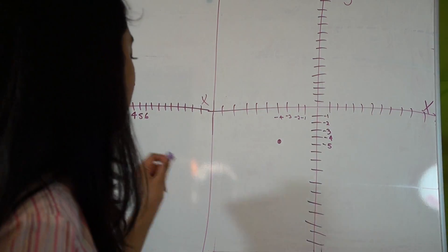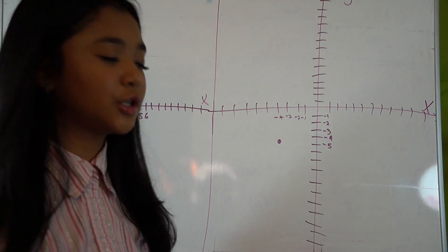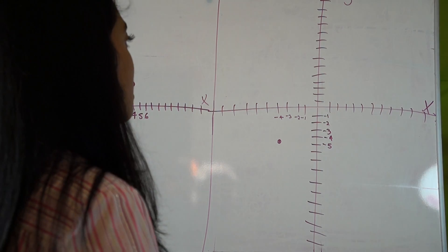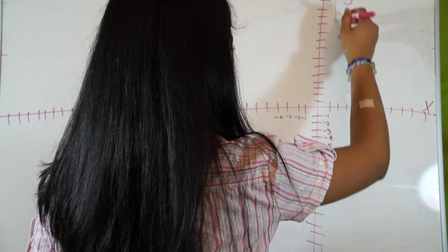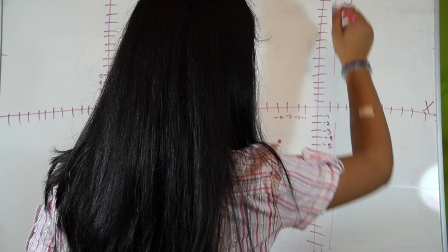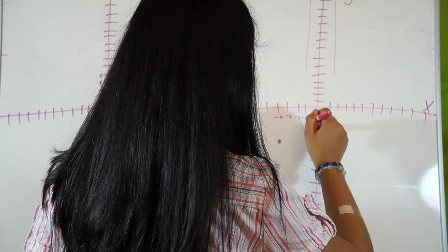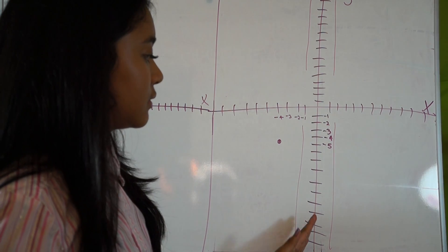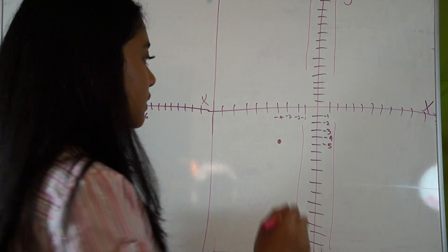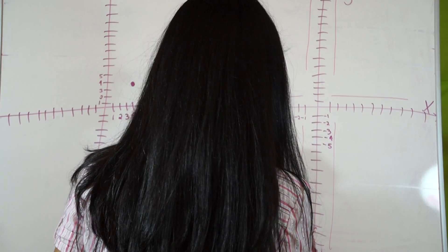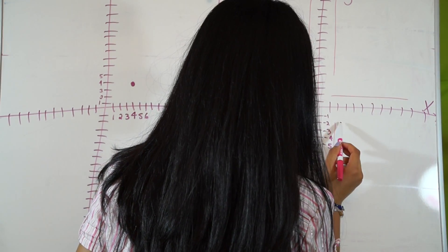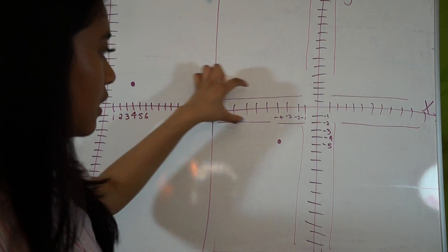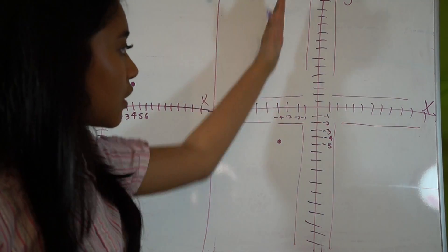So anyway, as you can see, we've got these two examples here. Y here, this part here, is all y values. Remember that anything vertical here is y values. All of this is y values, and all of this horizontally is all x values. These are all x values and these are all y values.